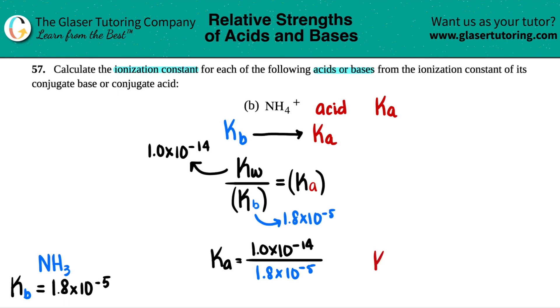And let's do it. Ka equals 1 times 10 to the negative 14th divided by 1.8 times 10 to the negative 5th. And 2 sig figs.